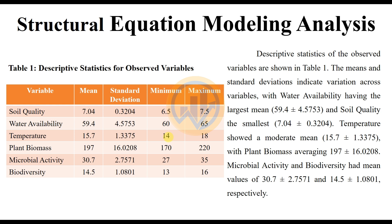The descriptive statistics of the observed variables are shown in Table 1 — descriptive statistics for structural equation modeling. The means and standard deviations indicate variation across the variables. Water Availability had the largest mean value of 59.4, and Soil Quality the smallest mean value of 7.04. Temperature showed a moderate mean value of 15.7, with Plant Biomass averaging 197. Microbial Activity and Biodiversity had mean values of 30.7 and 14.5 respectively.